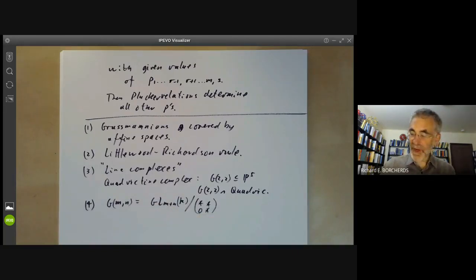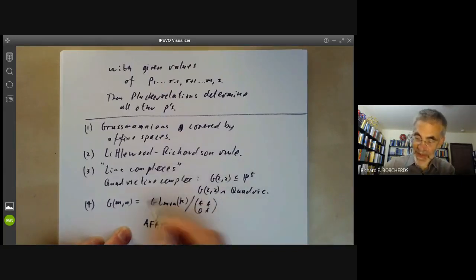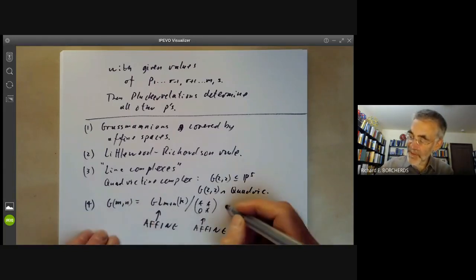So they are homogenous spaces, a quotient of some group by some subgroup. Notice, by the way, that this group here is affine. It's an affine variety, therefore an affine algebraic group. And this group here is also affine. And you might guess that if you take the quotient of an affine group by an affine group, you get an affine variety, but you don't. In general, the variety may be affine, but GMN is a projective variety, so it can sometimes be a projective variety.